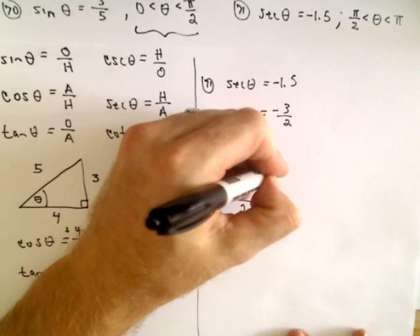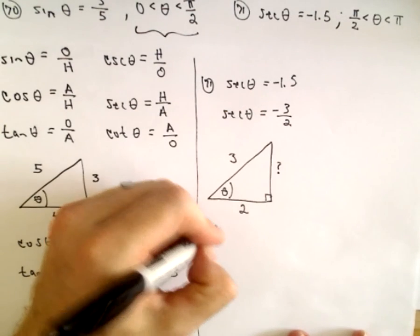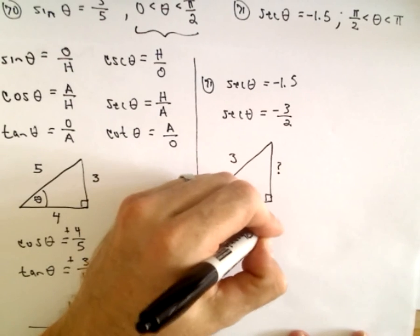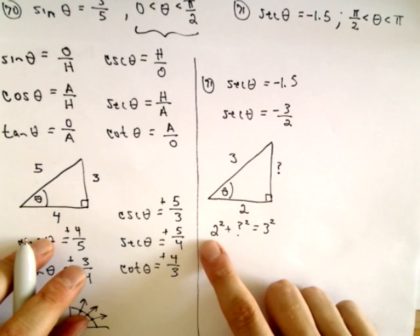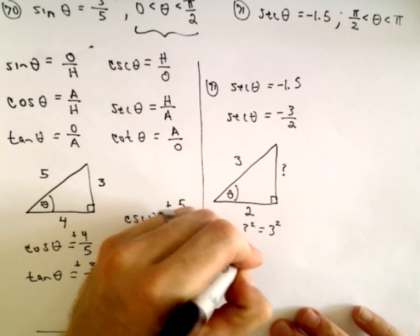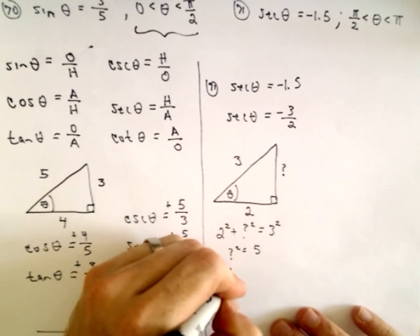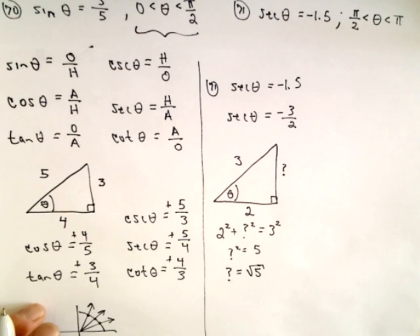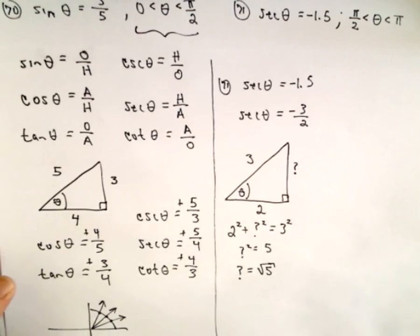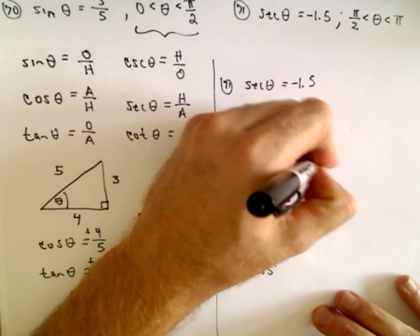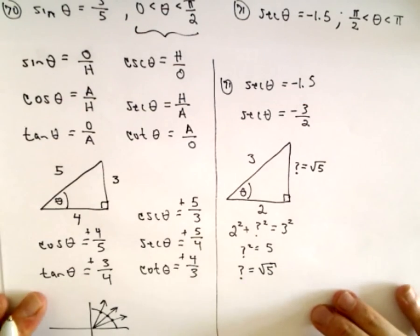So if I want to find this missing side, I could use the Pythagorean theorem. 2 squared plus the missing side squared, that's going to equal 3 squared. Well, that's going to be 4. We've got 9 on the right. If we subtract, we'll have 5. I'm going to take the square root of both sides. And I'm just going to keep the positive solution because I'll deal with the positives and negatives at the end. Plus for a triangle, it's got to be a positive length. So this missing side is going to be the square root of 5.